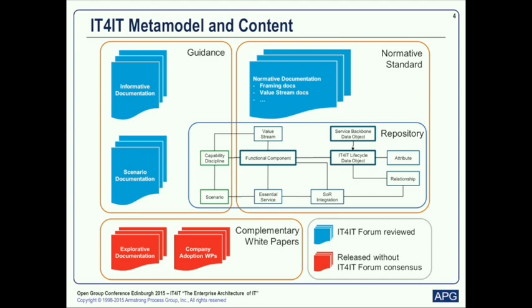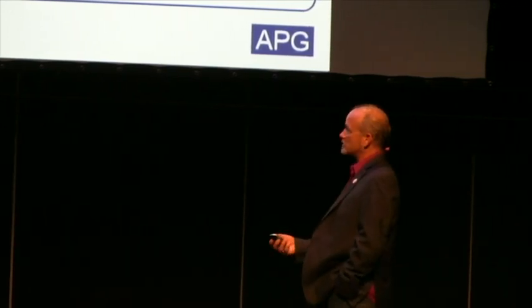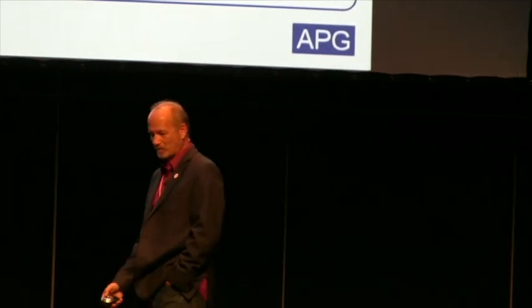You've likely seen similar pictures talking about what content is within the IT for IT reference architecture — there's both normative and informative content. We're going to take a look at some of the more informative content, particularly around capabilities and how we can use a TOGAF-driven, capability-based planning approach towards trying to improve the business of IT. We look at this as a logical application architecture — functional components representing the kinds of solutions needed to manage the business of IT, with interdependencies and a data fabric sitting on top of a service backbone.